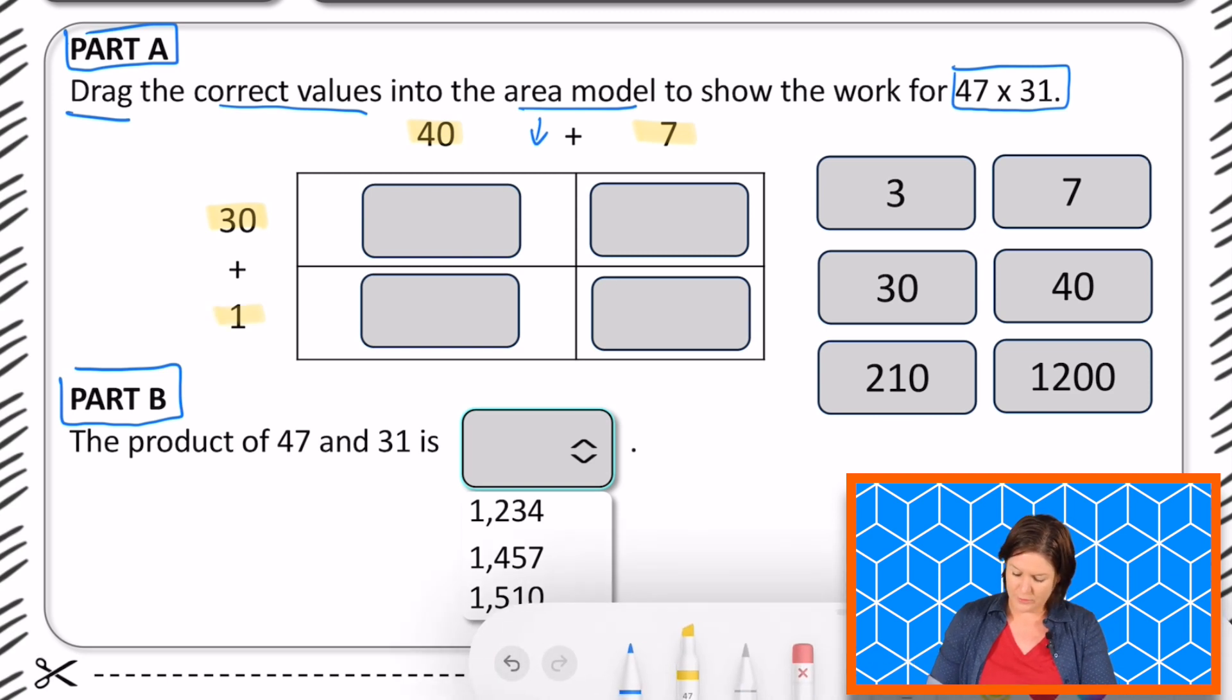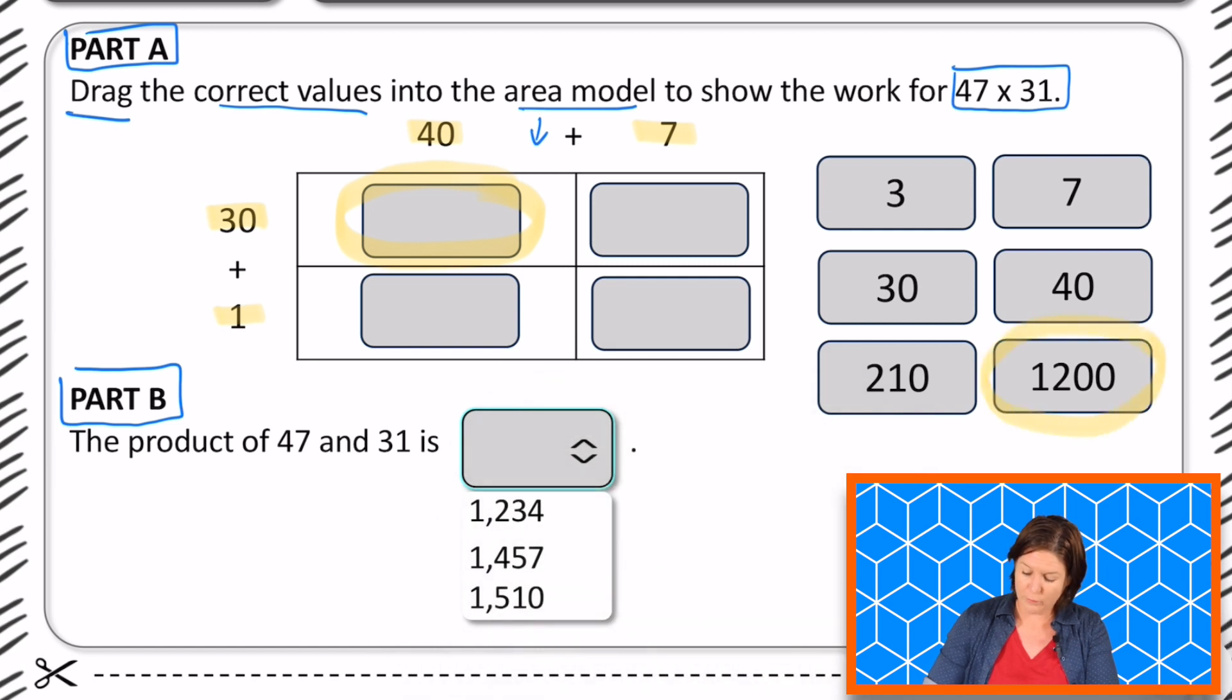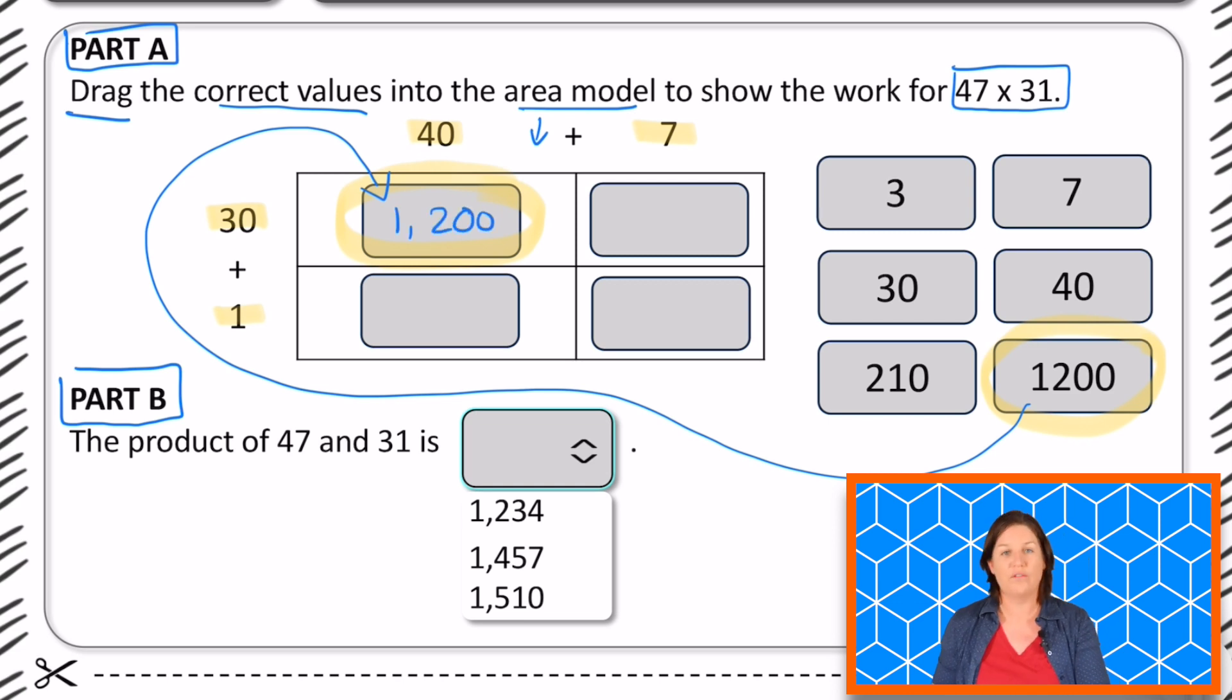So let's take a look at what would go into this one right here. Okay. We would have 30 times 40, which is what? 1200. So this one right here, if we could click on that and drag it where it goes, it would go right here into this one, right? So 1200 as it's being represented there.